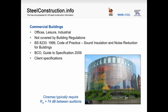Requirements for commercial buildings such as offices, leisure and industrial buildings are not covered by the building regulations. For these types of buildings, BS 8233, the Code of Practice for Sound Insulation and Noise Reduction in Buildings, might be useful. For offices, the BCO Guide to Specification gives guidance, but in many cases it will be client-specific specifications that are required. The sound insulation requirements will depend greatly on the type of building — for example, in cinemas, walls between auditoria are typically required to achieve an RW value of greater than 74 dB.